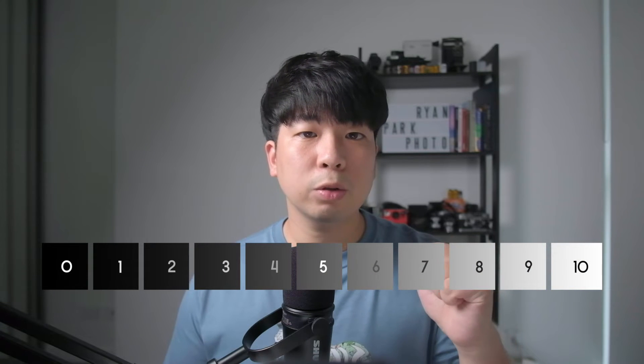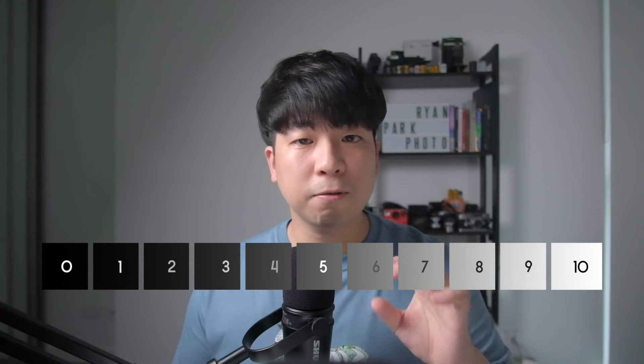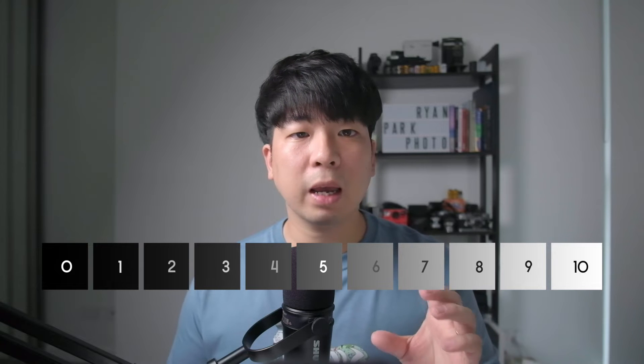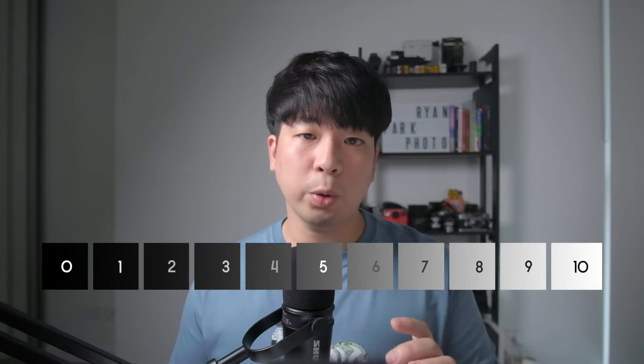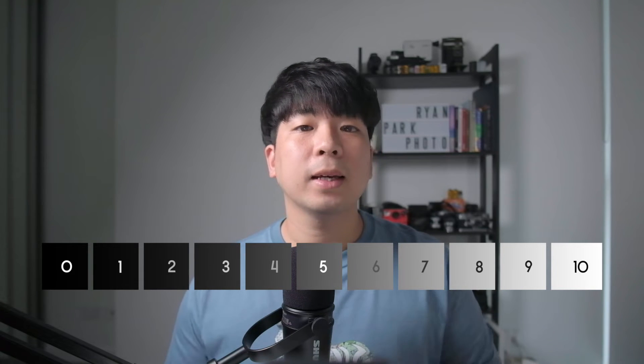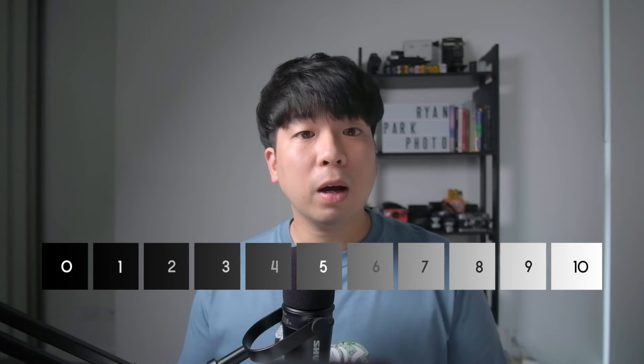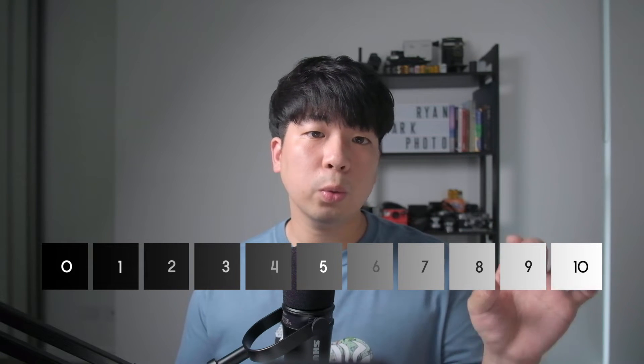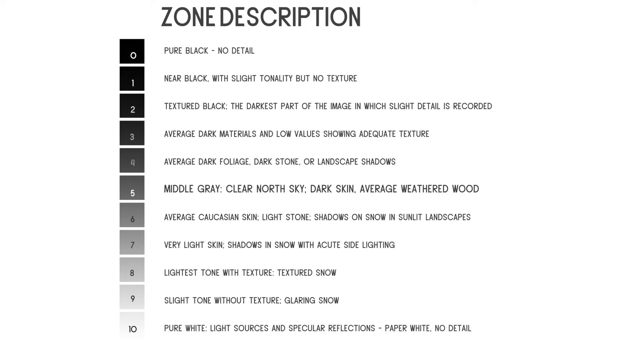Zone zero represents pure black, zone five is middle gray, and zone ten is pure white. These values are known as zones, and one zone change is equal to one stop in exposure.